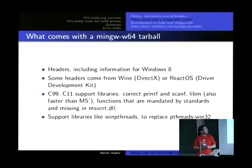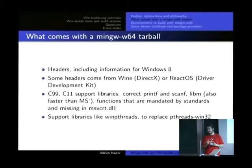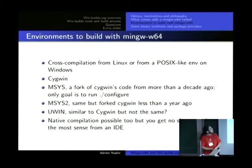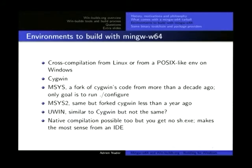There's also some code, which is mostly for when Microsoft's C runtime doesn't handle C99 or C11 well — not all of it. MinGW-w64 adds code to fill in the gaps. And the nice thing is that for libm, MinGW-w64's code is actually faster than Microsoft's. If you want to build with MinGW-w64, you have several possibilities: you can cross-compile from Linux, or you can build from any of the POSIX-like environments which run on Windows.